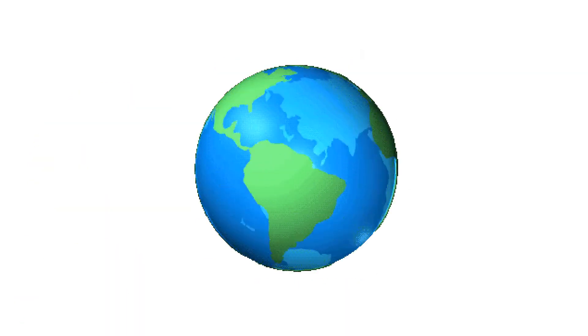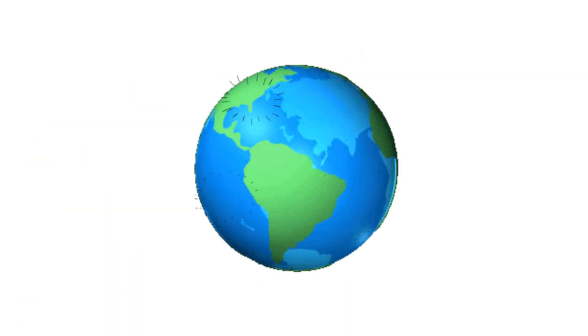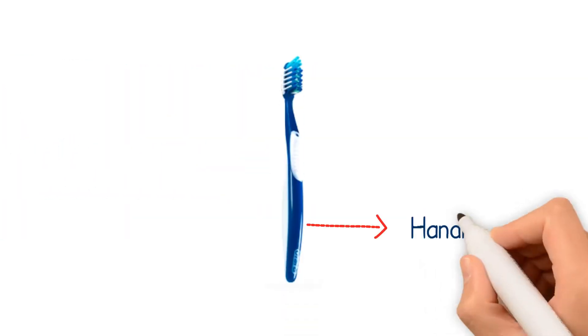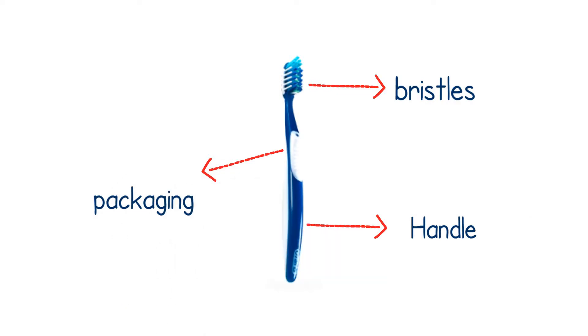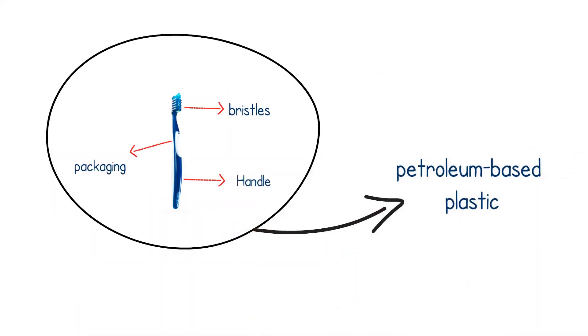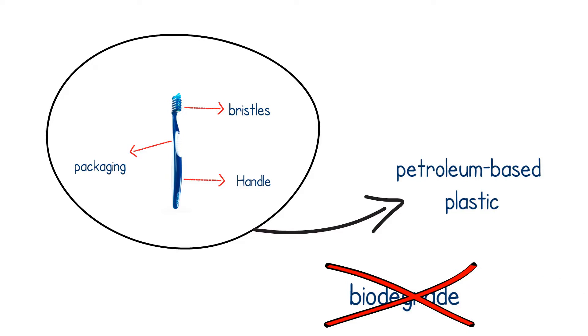And, in fact, all plastic toothbrushes are still existing somewhere in the planet since they started in 1938. Every part of the toothbrush handle, bristles, and packaging is made from petroleum-based plastic, which will not biodegrade for thousands of years.